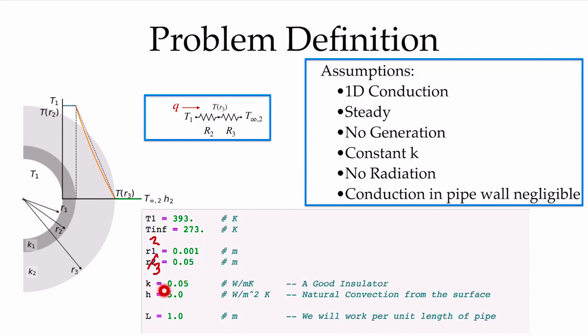We'll pick a conductivity for the insulation of 0.05 watts per meter Kelvin — a decent insulation with a very low conductivity. We'll use a relatively low convection coefficient, perhaps natural convection on a calm day, and a pipe length of 1 meter into the screen, such that our results will be the heat loss per unit length of the pipe system.